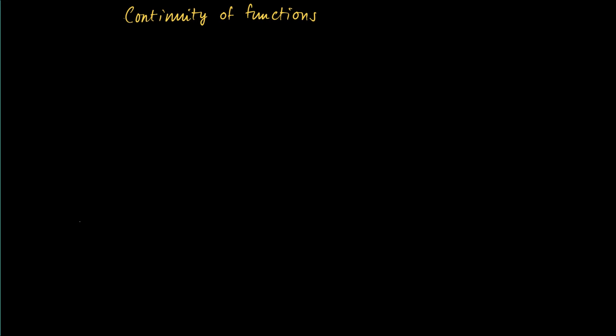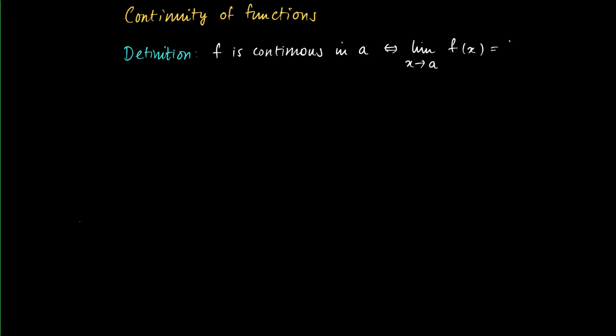Recall that we discussed the property of continuity of functions in a very intuitive way. But now we have limits of functions and we can specify exactly what we mean by f being continuous. We use the following definition: f is continuous at a, where a belongs to the domain of f, if and only if the limit as x approaches a of f(x) equals f(a).